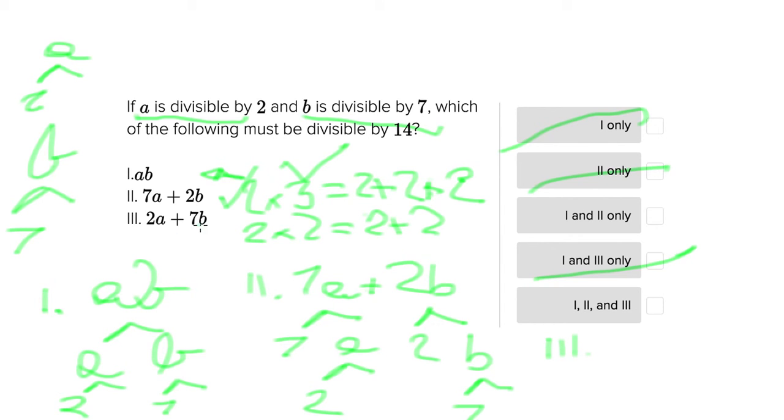So Roman numeral 3 gives us 2a plus 7b. This one seems very similar to the second answer choice, so it looks promising, but let's see. We have 2a plus 7b, and what we see here is we end up with 2 times a, and a only has 2, and 7 has 7 and b, and b only has 7.